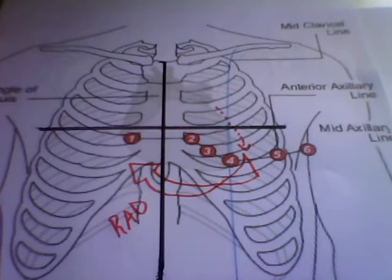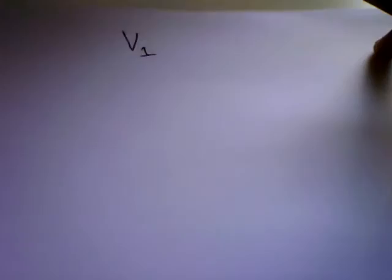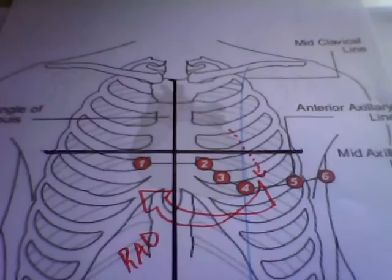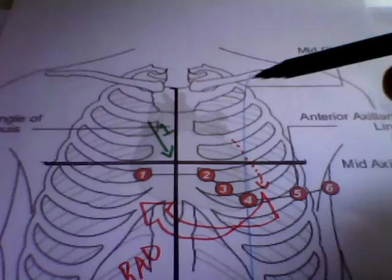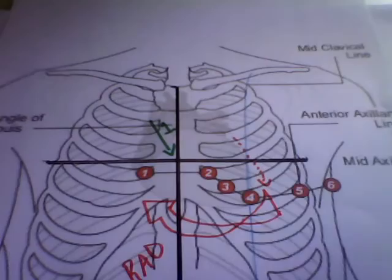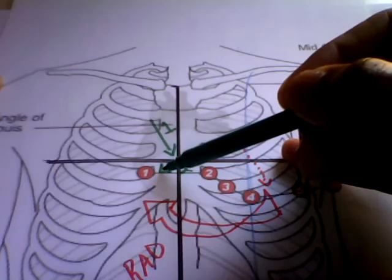Now the first lead that I want to discuss is V1 and then we are going to look at what happens in V6 later on. So in V1, I'm just I'll just keep exchanging so that you'll see clearly. So we know that we are going to get vector one which is atrial depolarization, so that is our P wave.